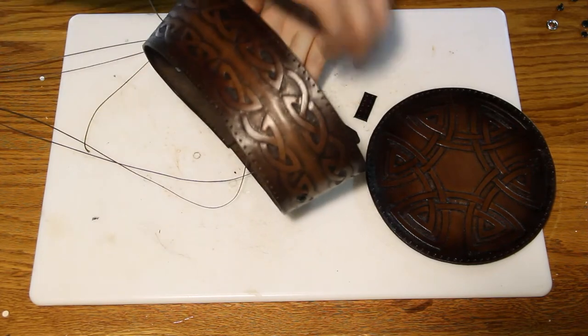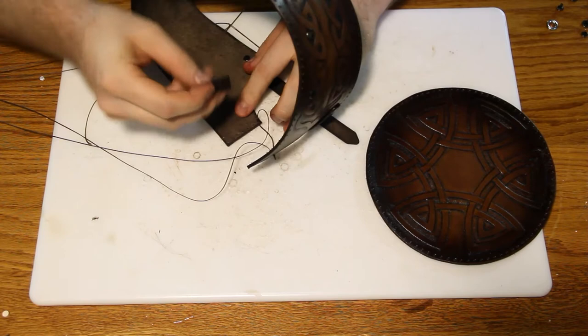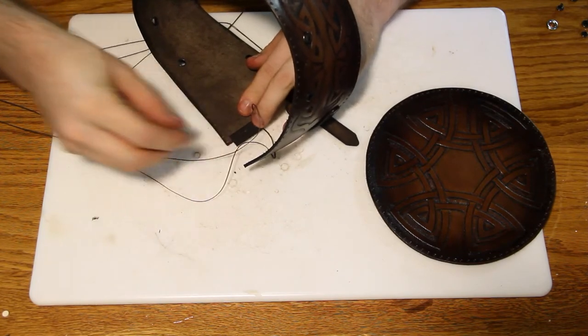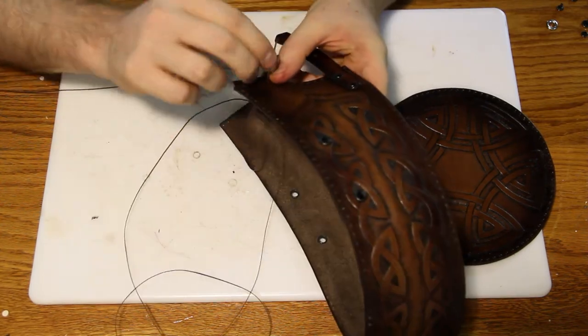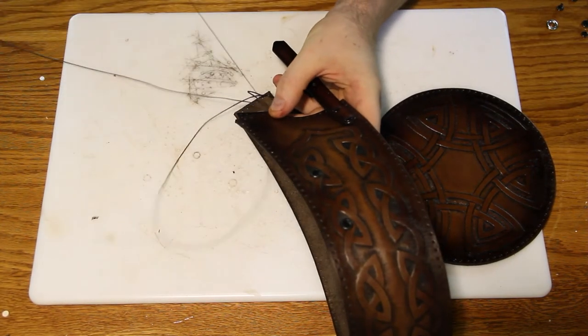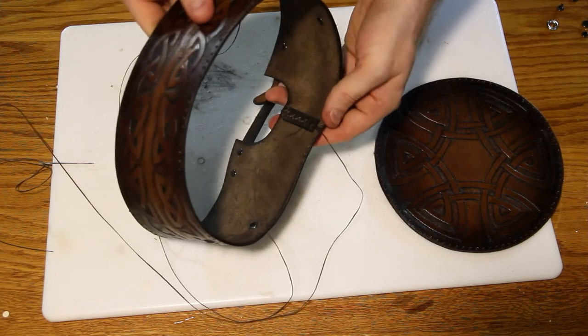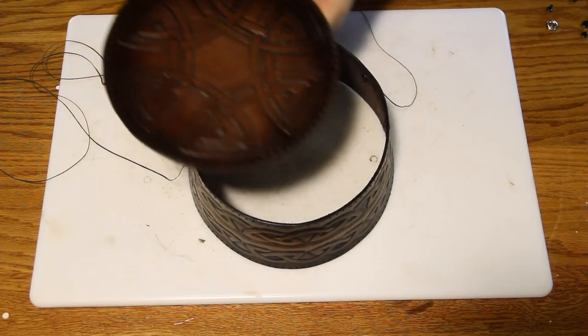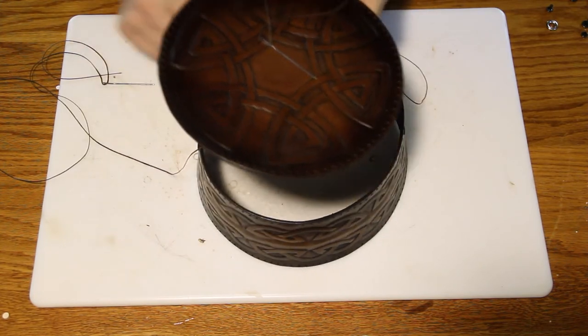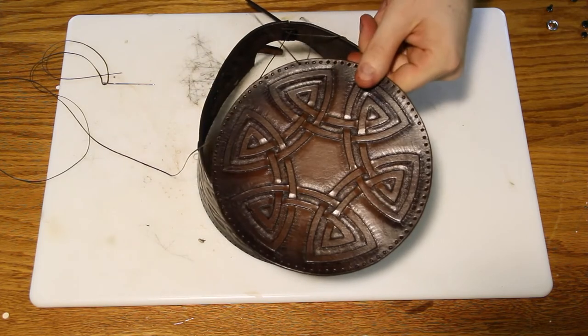That small extra piece that you were probably wondering what it was for is actually for the back of the hat. This is optional. I chose to add it because I didn't want the seam to show through the back. So you're going to want to do a cross stitch on the inside and then do a straight stitch on the outside. From here on I started stitching the top portion of the hat. If you decided to do a carving, make sure your pattern is oriented the way you want.